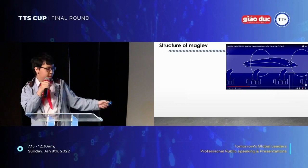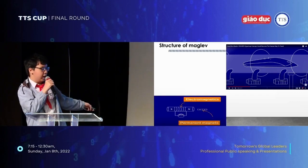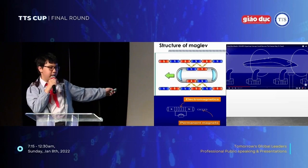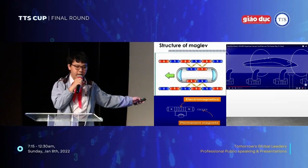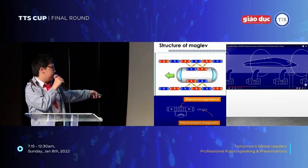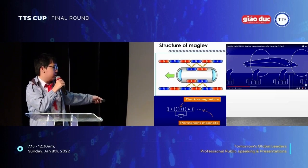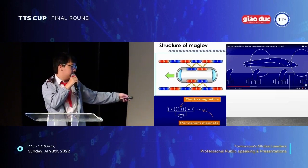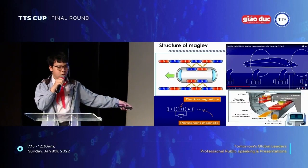Magnetic levitation uses two types of magnets: electromagnetic and permanent magnets. These magnets are put along the side of the track. Same poles repel and different poles attract each other.